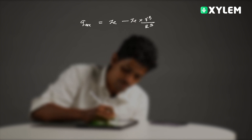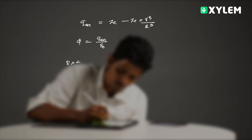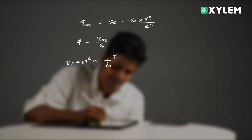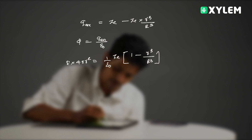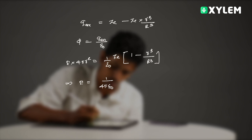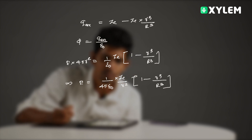Now substitute into Gauss's law. The flux φ equals Q enclosed divided by ε₀. So E into 4π r² equals (1/ε₀) times ZD times (1 minus r³ divided by capital R³). The value of E equals (1 / 4π ε₀) times (ZD / r²) times (1 minus r³ / capital R³).